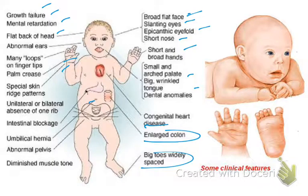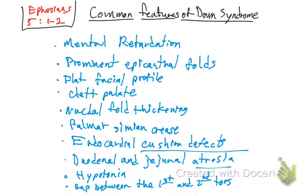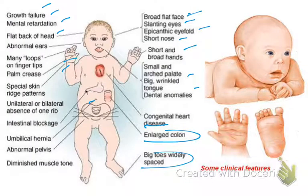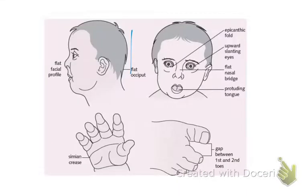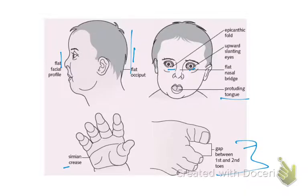Remember there is atresia of the duodenum and the jejunum. So they can get intestinal blockage, umbilical hernia, abnormal pelvis, and diminished muscle tone. Also to review: epicanthal folds — the skin fold around the eyes — and upward slanting eyes. They have a flat nasal bridge, flat occiput, flat facial profile, and a protruding tongue. They have a simian crease, and the gap between the first and second toes.